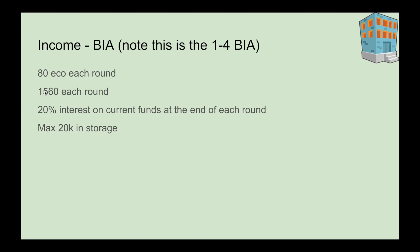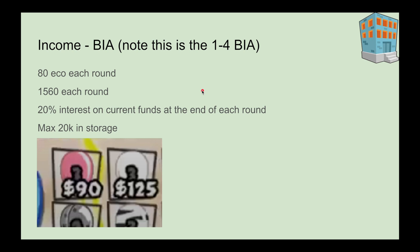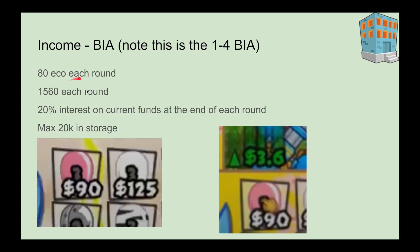With a maximum of 20k in the storage of the bank, the 1-4 BIA is what we're looking at here. It has been proven to be the most efficient. So how much is this 80 eco each round worth in money?